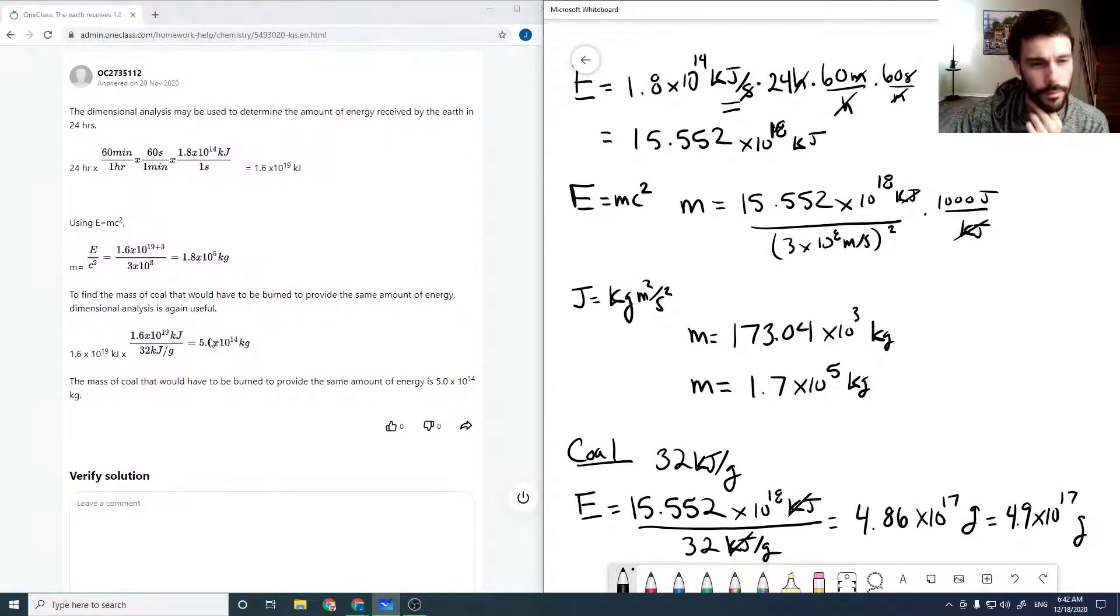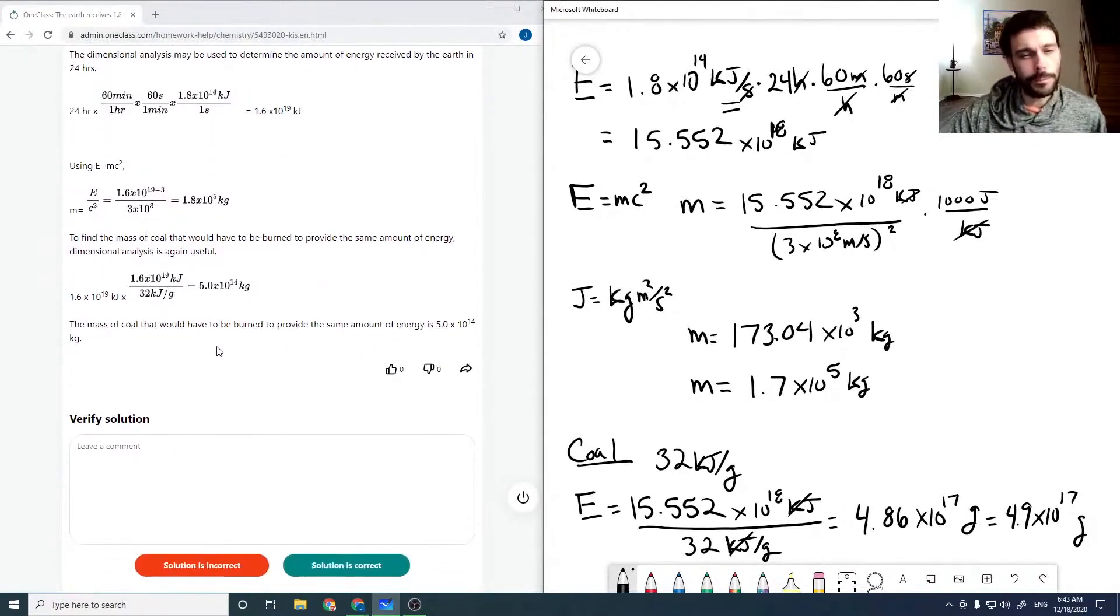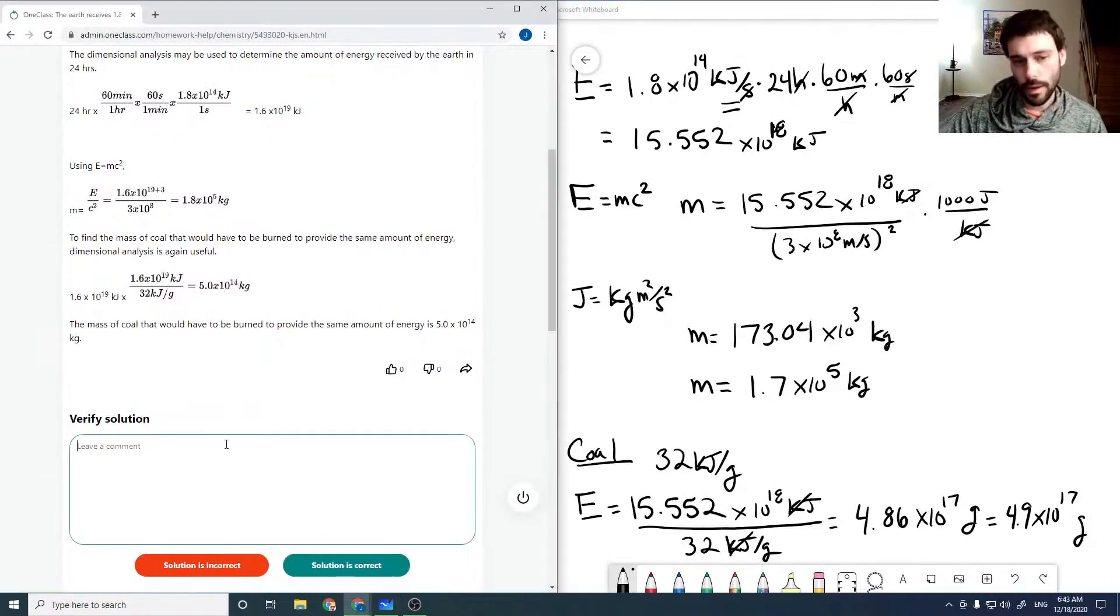And to get the mass of coal, again, we would have 5, so this is in kilograms, that's why it's 10 to the 14. And grams would be 10 to the 17. And so that looks okay. The difference in the .1 is likely, again, just rounding errors. So that looks good.